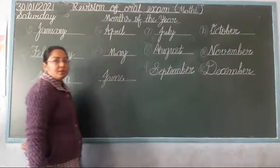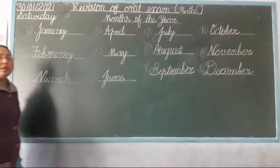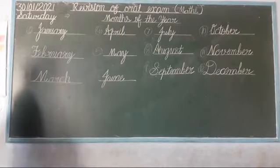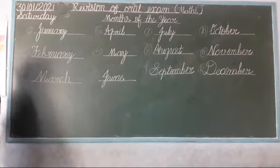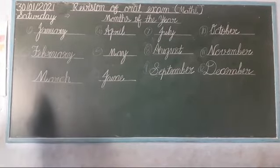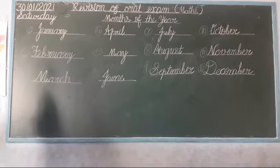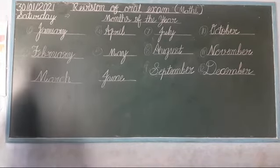Okay students, how many months are there? पूरे साल में कितने months होते हैं? 12 months होते हैं. 12.